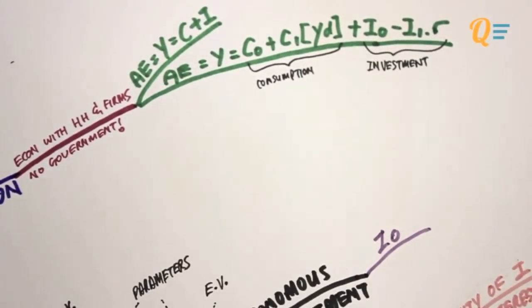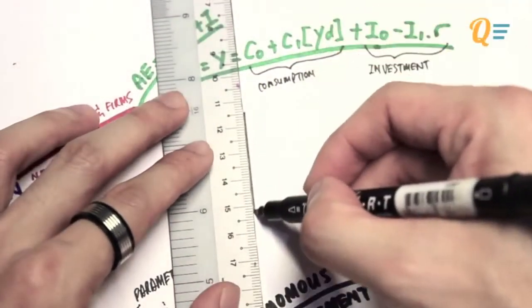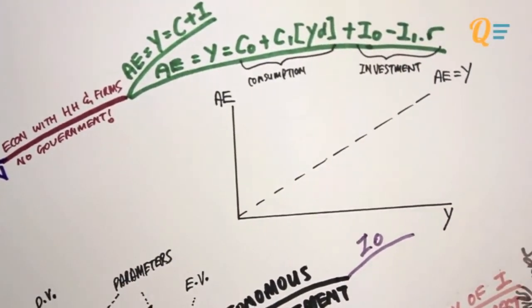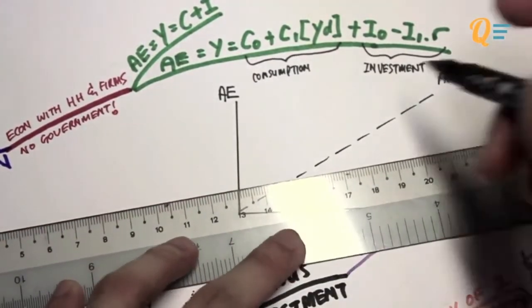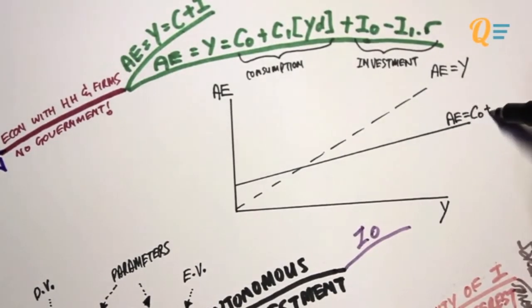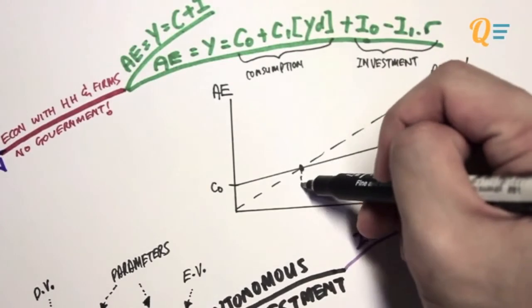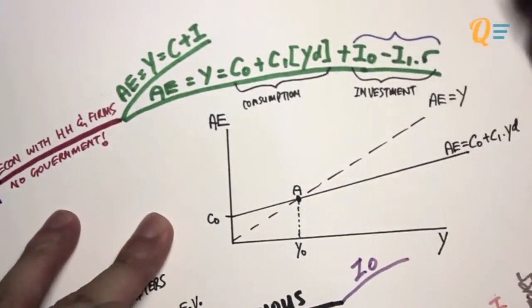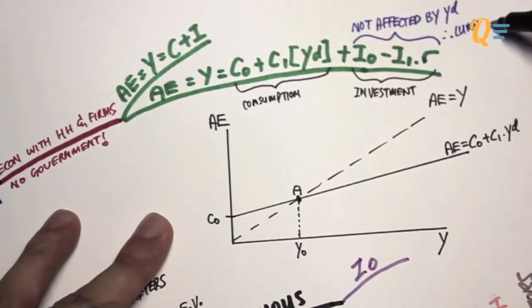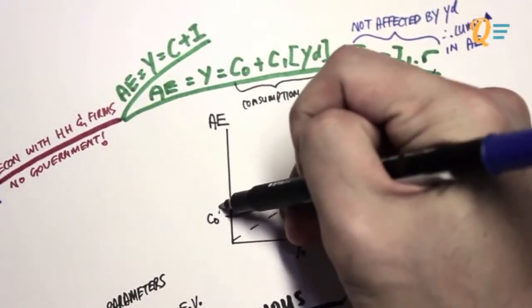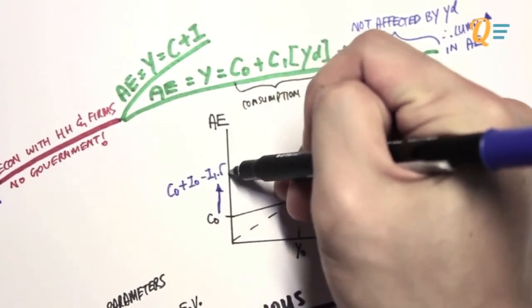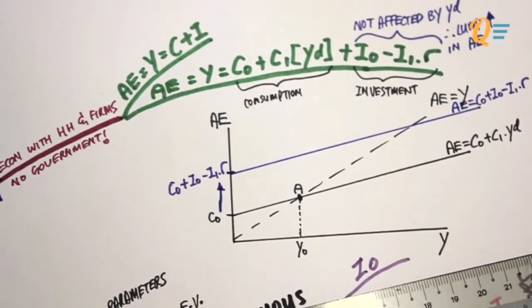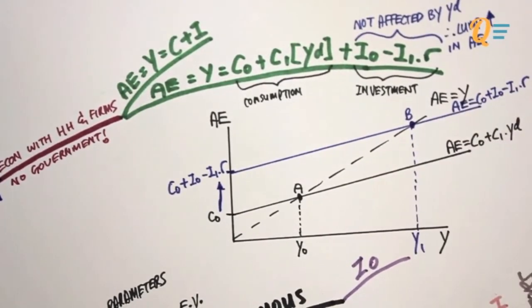Now I'm going to draw the Keynesian cross diagram, with aggregate expenditure on the vertical axis and output on the horizontal axis, and a 45-degree line to show AE equals Y at equilibrium. First, I'll draw the AE function with just consumption: AE equals C0 plus C1 times disposable income, giving equilibrium output at point A of Y0. Now adding investment — since investment is not affected by income, it is a lump-sum increase in aggregate expenditure. Therefore, the vertical intercept increases by I0 minus I1R, and the AE curve shifts directly upwards, giving a new equilibrium at point B with a higher income.